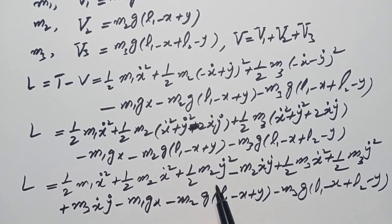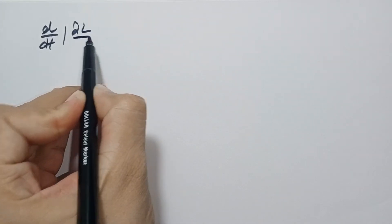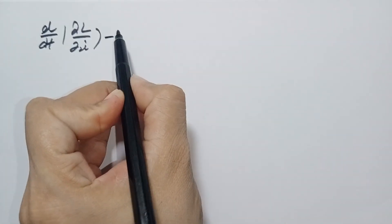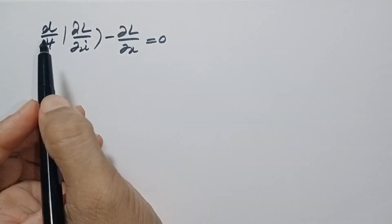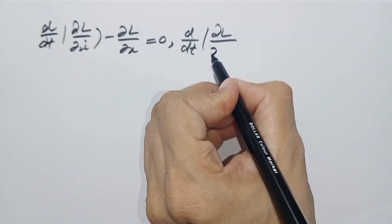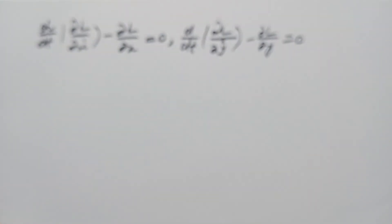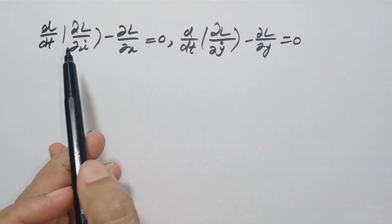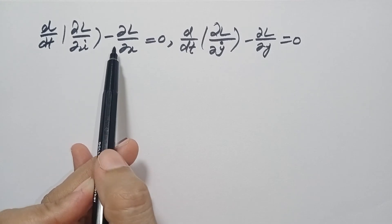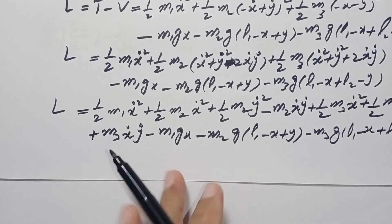Since the Lagrangian depends on two generalized coordinates x and y, there will be two Lagrange equations of motion: d/dt(∂L/∂ẋ) − ∂L/∂x = 0, and d/dt(∂L/∂ẏ) − ∂L/∂y = 0. We will now find the derivatives ∂L/∂ẋ, ∂L/∂x, ∂L/∂ẏ, and ∂L/∂y from the Lagrangian.